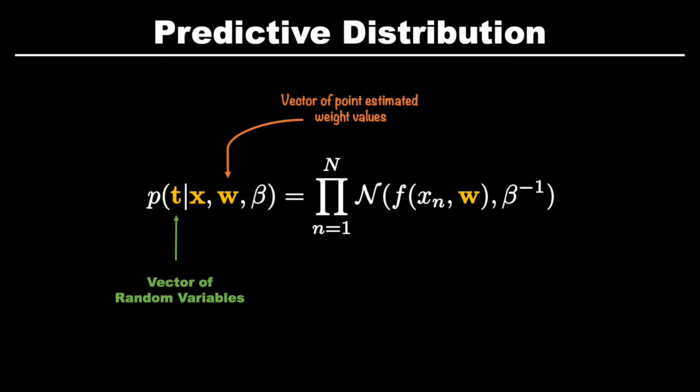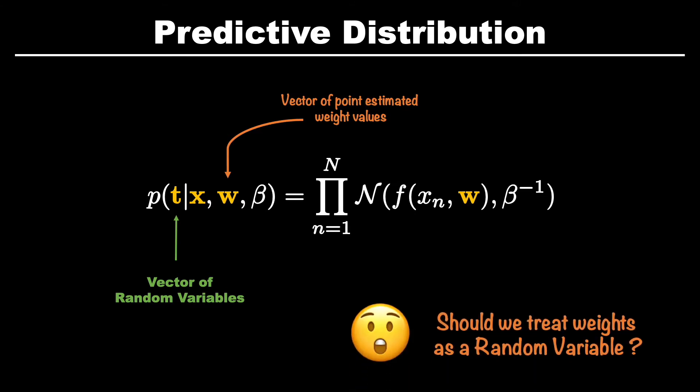So our situation is that we have started to see the target variables as random variables, but our weights or weight vector and even beta parameter are still point estimates. And very much like in part two, one way to have confidence about these unknowns is to treat them as random variables. This way we can have a probability distribution associated with various values our unknown parameters can take.